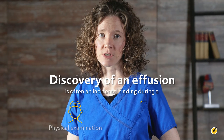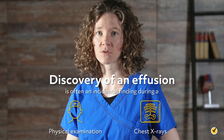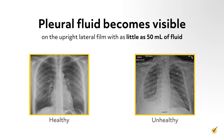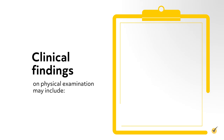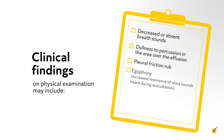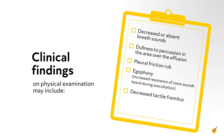The discovery of an effusion is often an incidental finding during a physical examination or chest x-ray. Pleural fluid becomes visible on the upright lateral film with as little as 50 milliliters of fluid. Clinical findings on physical examination may include decreased or absent breath sounds, dullness to percussion in the area over the effusion, pleural friction rub, egophony — which is increased resonance of voice sounds heard during auscultation — decreased tactile fremitus, and asymmetrical chest expansion.